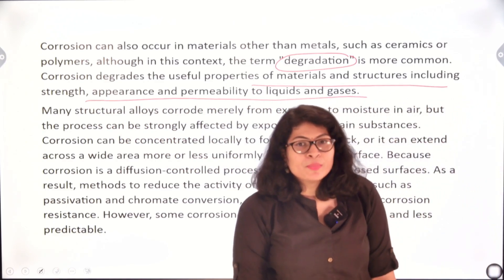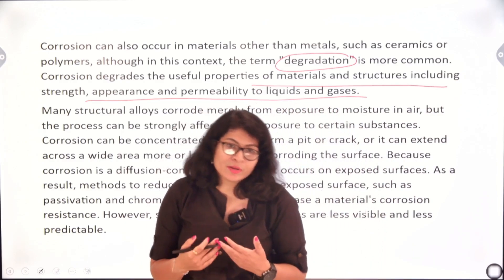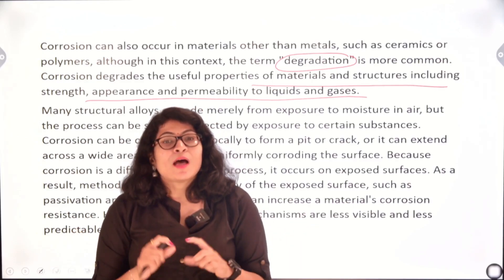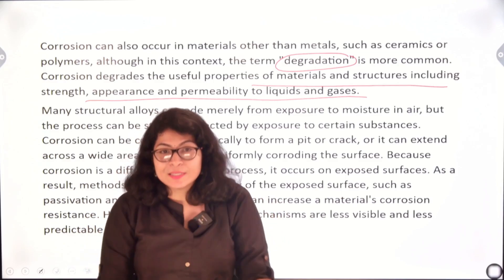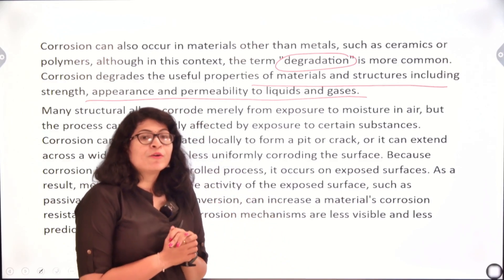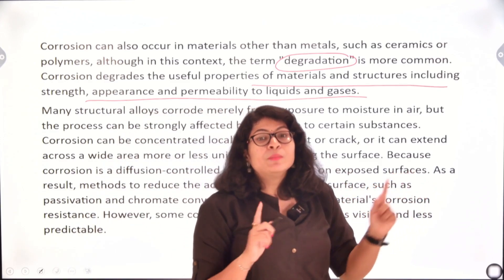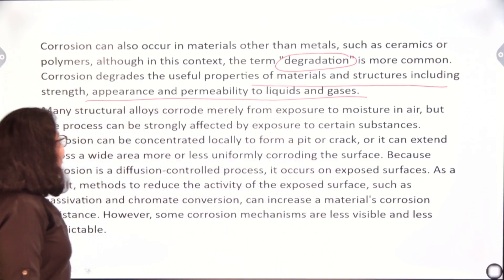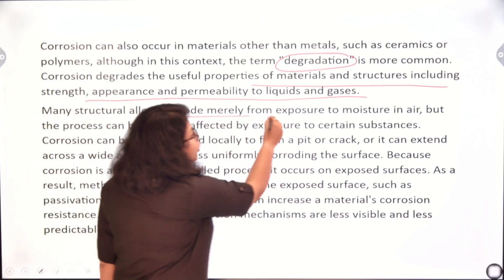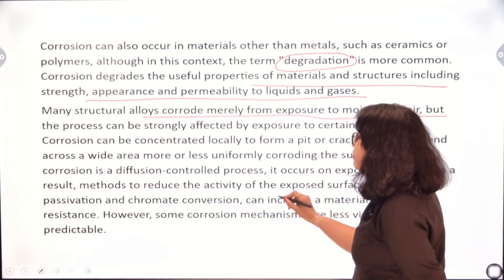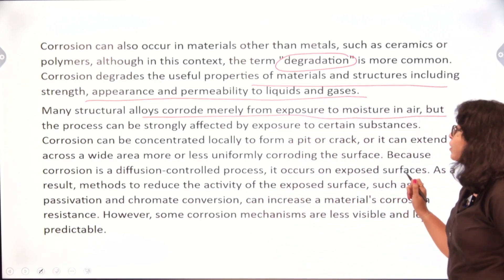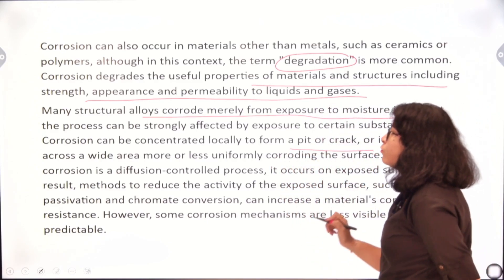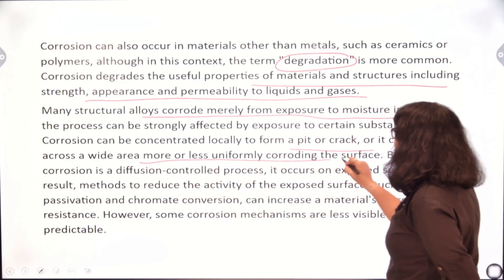For example, if an iron rod gets oxidized when it reacts with air over a very large amount of time, the iron bar becomes very porous and breaks easily. So corrosion basically affects the strength, the appearance, and the permeability — meaning porosity — of the metal. Many structural alloys corrode merely from exposure to moisture in air. Corrosion can be concentrated locally to form a pit or crack, or it can extend across a wide area, more or less uniformly corroding the surface.